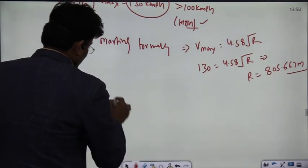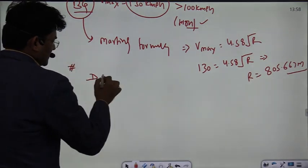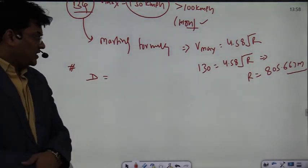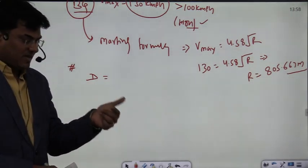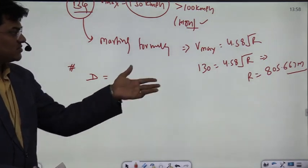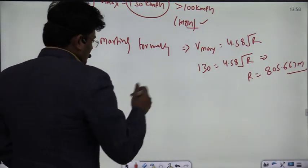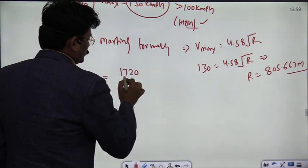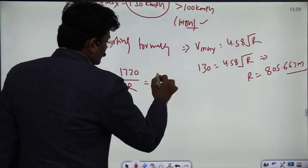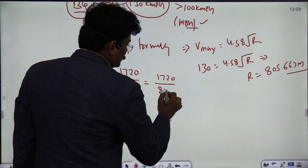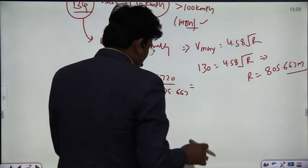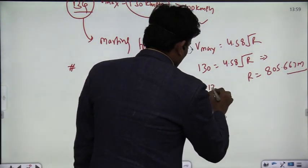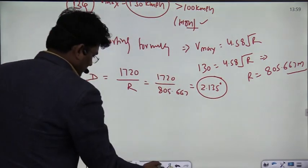The second thing is the degree of the curve. In surveying, the degree of curve is the central angle subtended for a complete chain or tape length, which by default is 30 meters. The formula is: Degree = 1720 / R. So 1720 divided by 805.667 gives the degree of the curve as 2.135 degrees.